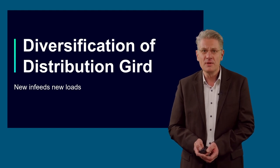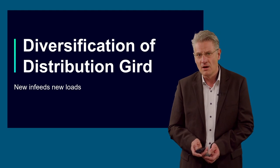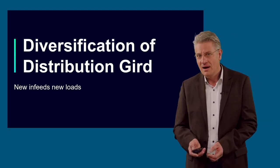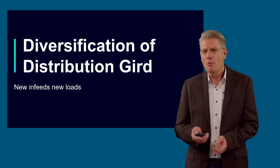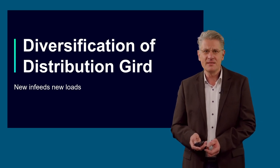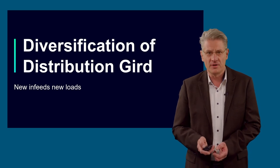New loads and increasing volatile renewable in-feeds are pushing diversification of distribution grids. While parts of the grid are idle, others are utilized at their limits. Furthermore, the pressure on the existing infrastructure is increasing fast and in different directions.